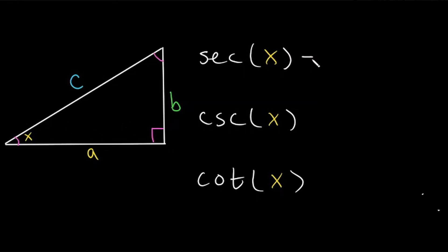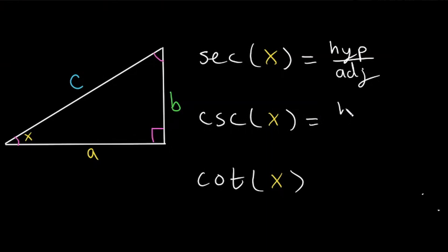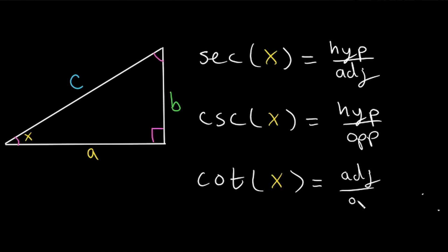Secant is defined as the ratio between the hypotenuse and the adjacent side, so it's hypotenuse over adjacent. Cosecant is hypotenuse over the opposite side. And cotangent is adjacent side over the opposite side.